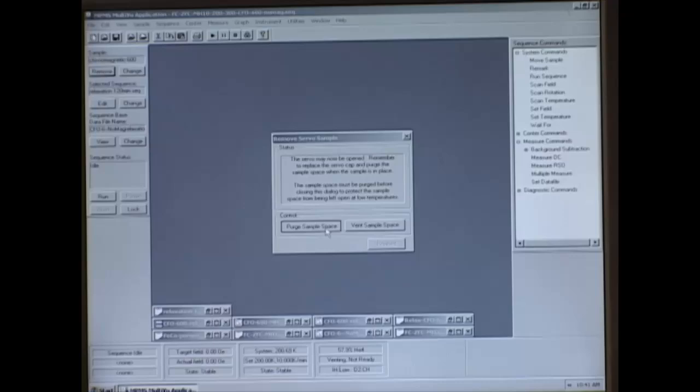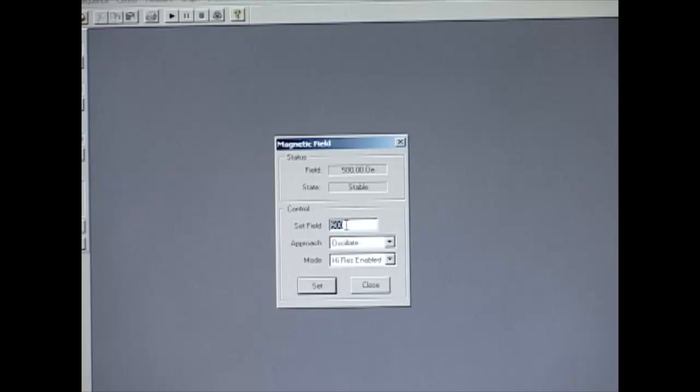Enter the sample name, mass, area, and length. Set the magnetic field to 500 Oersted. Initialize the transport to move the sample into the chamber.